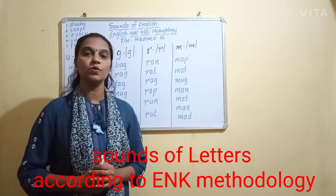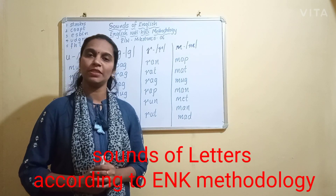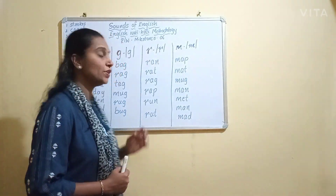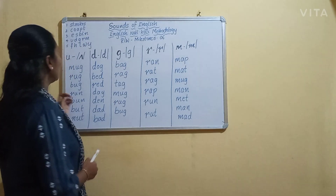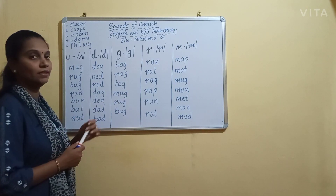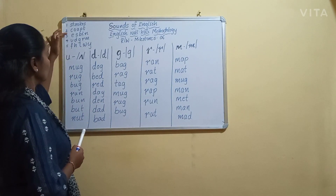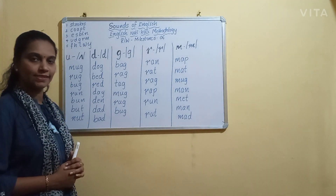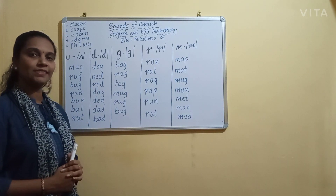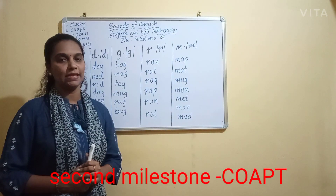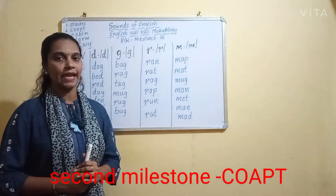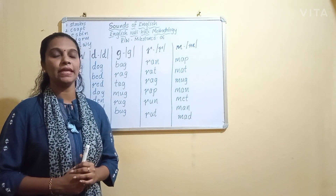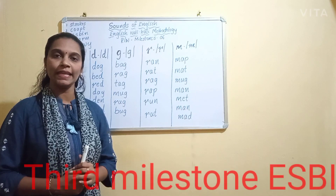English according to Nalikali methodology. In the last video we learnt about the two clusters of letters, that is C-O-A-P-T and E-S-B-I-N.